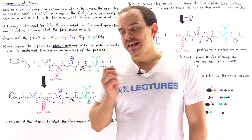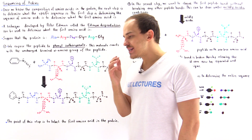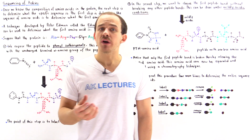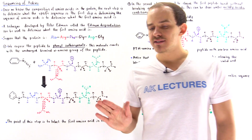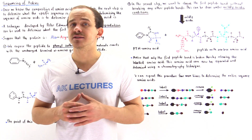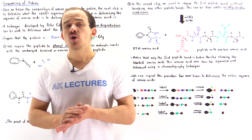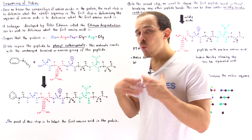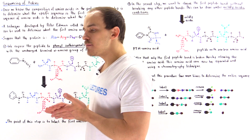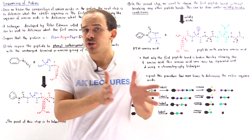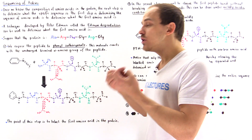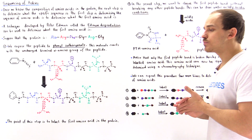Previously we said that if we purify a protein we want to study and don't know anything about it, the first step is to determine the composition of amino acids — not only what types we have but also how many of each. Once we know that information, the next logical step is to determine exactly what the order of amino acids is inside that protein, meaning we want to sequence those amino acids.